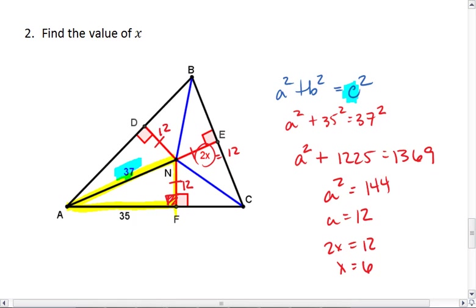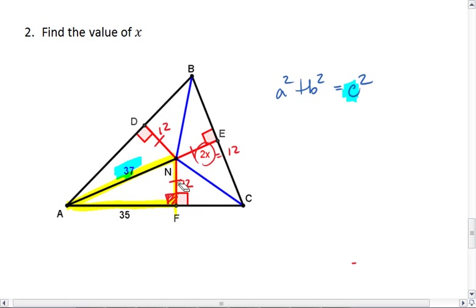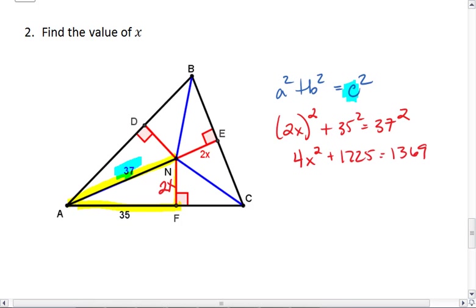Now there is another way you could have written this equation. Again, you would use the Pythagorean theorem, but instead of just leaving it as an A, we're going to go ahead and use the 2X here. The important part of this is how you set it up. You need to write the 2X in parentheses because the entire 2X is being squared. This would give us 4X squared plus 1225 equals 1369. So 4X squared equals 144. So X squared equals 36.